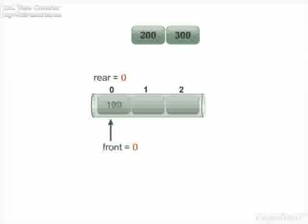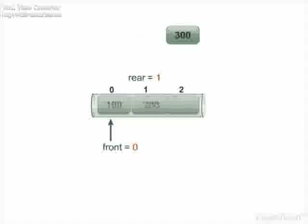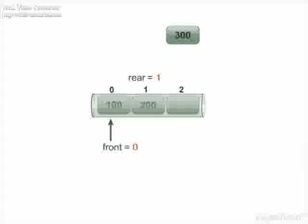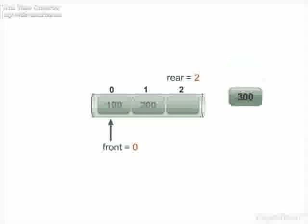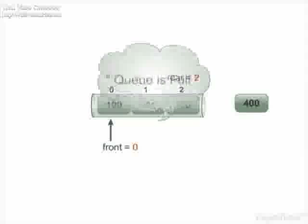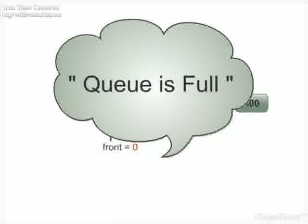Next, we want to add number 200. It is added after 100 and now rear is 1. Next, add number 300, which is added after 200, and now the value of rear is 2. Then if we try to add another element, say 400, the queue is full, so it is not possible.